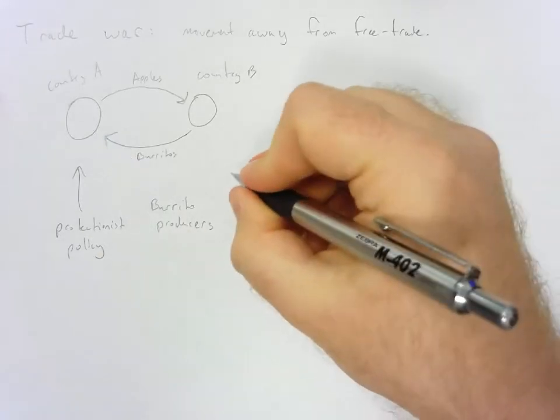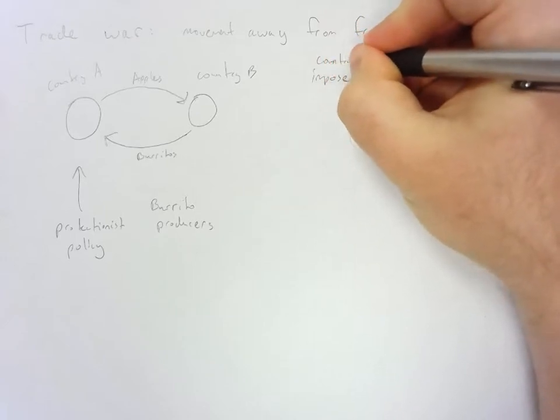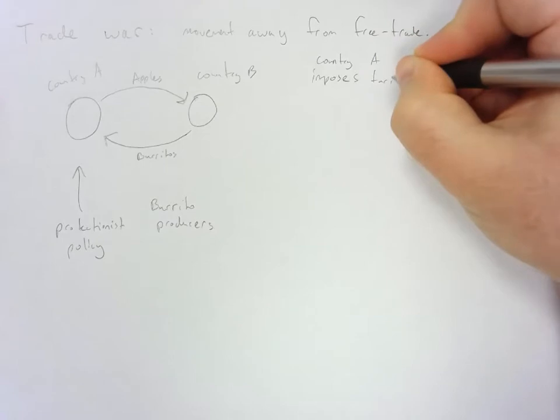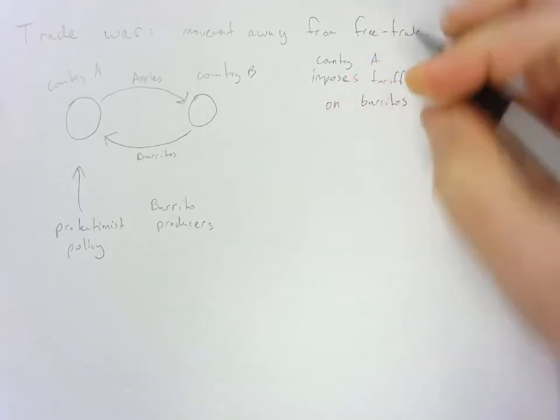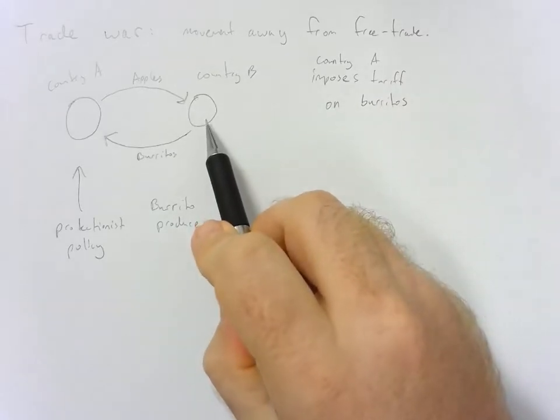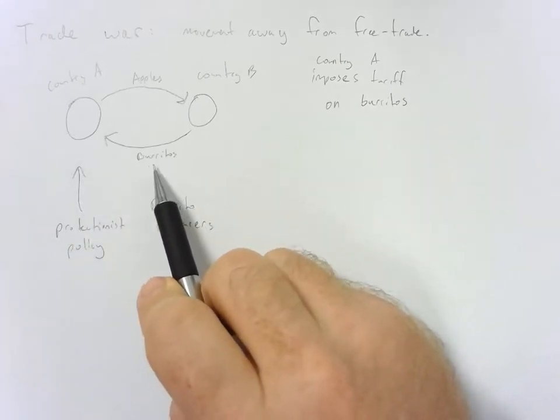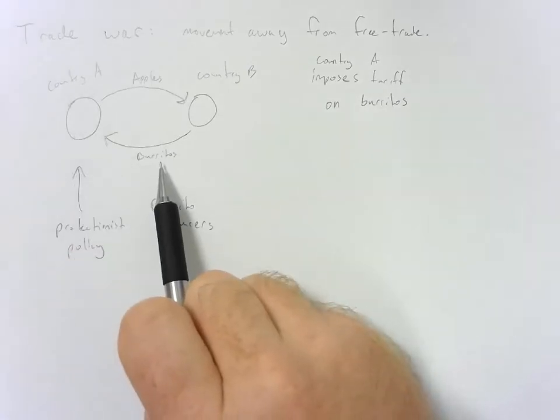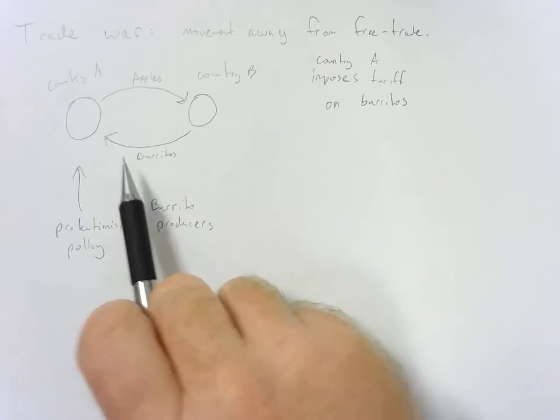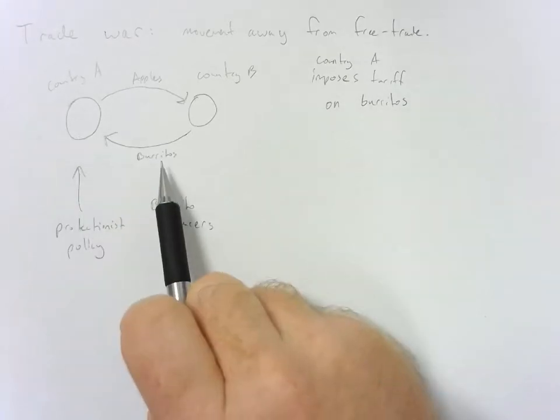Well, we can impose a tariff on burritos. So country A imposes tariff on burritos. And so basically what they say is, okay, country B is taking advantage of something that country A doesn't have, which allows them to sell burritos at a much cheaper price than country A can produce them at. So they put a tariff, which is essentially a tax, on their burritos. And what that does is it allows the burrito manufacturers in country A to compete. They can sell their burritos for a little bit more because now there's this tariff or tax.